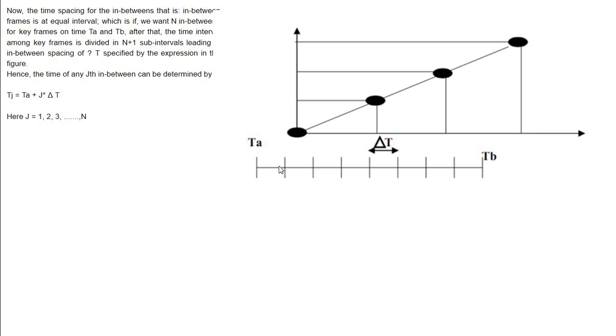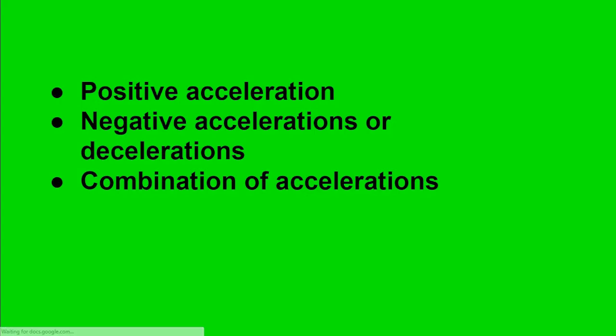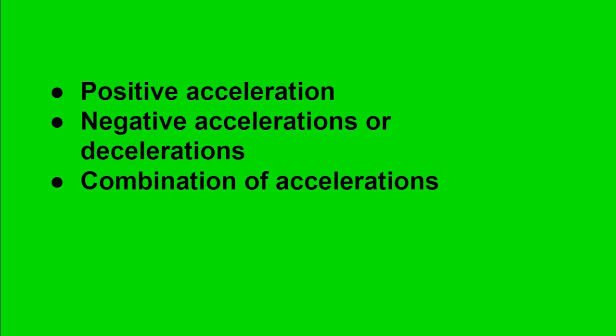In combination accelerations, first speed is increasing. These distances are increasing. And here increase, and here. Then these are decreasing. So we can change this diagram.